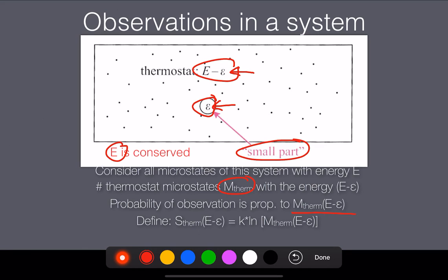And then you would just, for now, have to buy that the probability of this happening, that is the probability of my small system having energy epsilon, is proportional to whatever this number M-therm E minus epsilon is. In principle we don't know more, but well we know a little bit, right? This is number of states or something. Unless you have an infinite energy or something, there will be at least one state, so we can say that it's larger than zero. I need to be able to count.